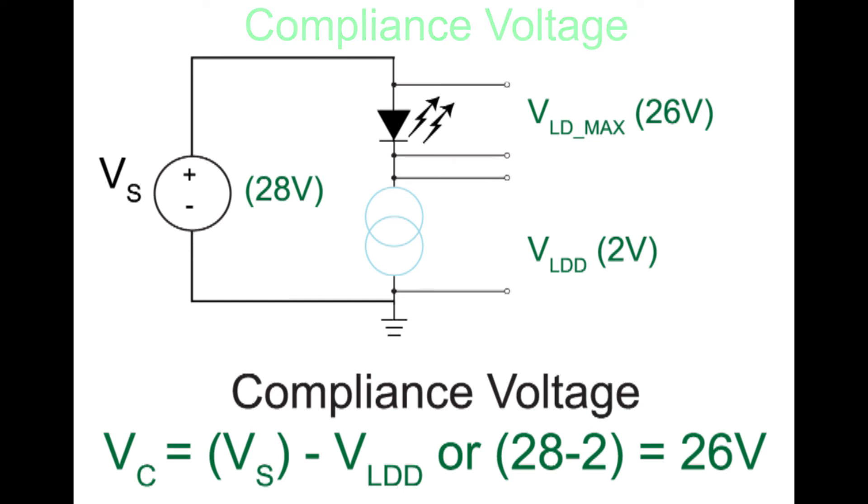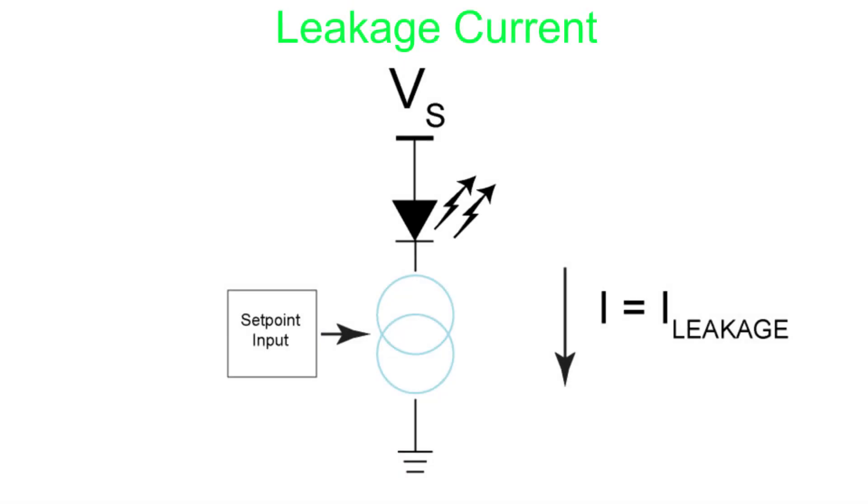Ideally, when a laser diode driver is turned off, no current flows through the diode. In practice, power is not turned off, but the laser diode is disabled. The circuitry disables the control system, not the current source. Small amounts of leakage current can still flow through the diode.